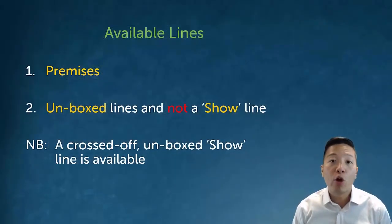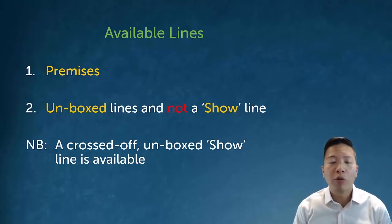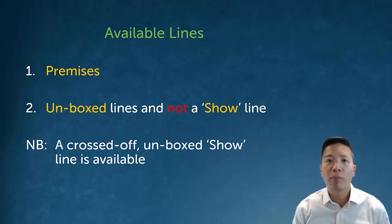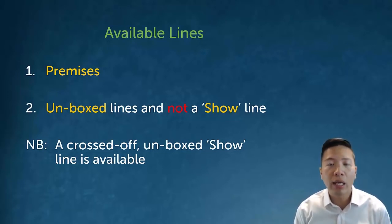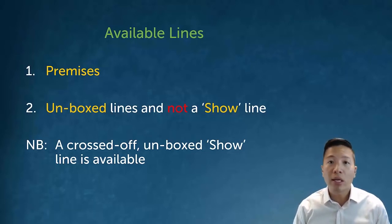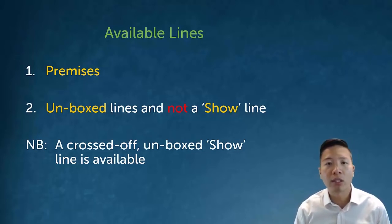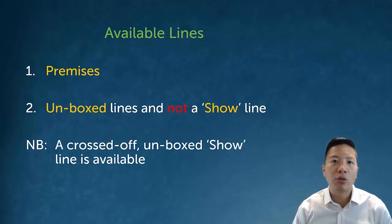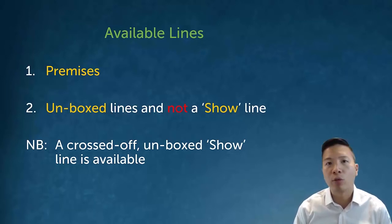A very important concept when doing derivations is that of available lines. Available lines are basically things that you can actually use in your derivation — you can't just make up random symbolic sentences to insert, and there are other interesting rules about what you can and can't use.